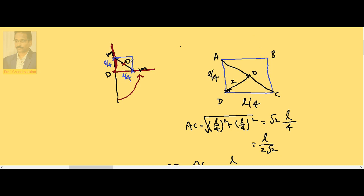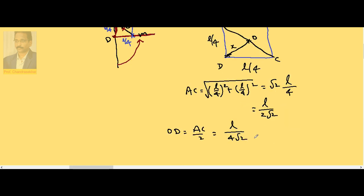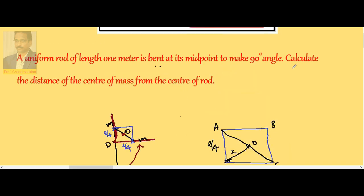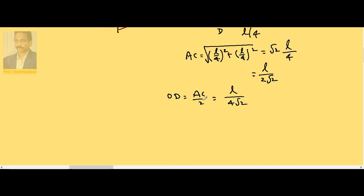From D to O, distance is X. X is nothing but L by 4 root 2. Here L is given as 1 meter long. If I take it in centimeters, this becomes 100 by 4 root 2, or 25 by root 2. 25 I can write as 12.5 root 2 centimeters.